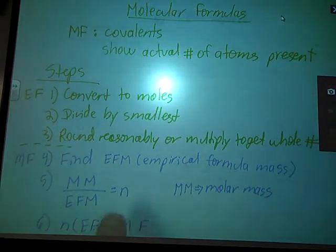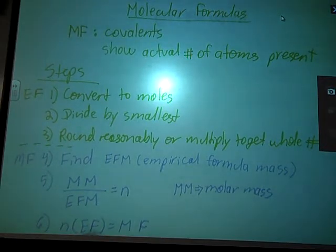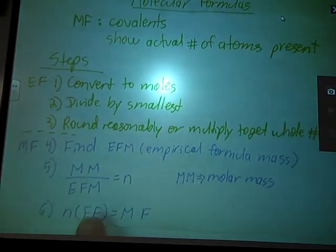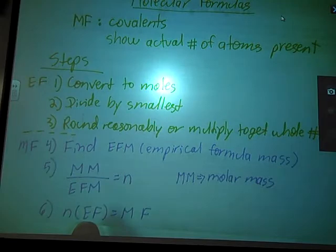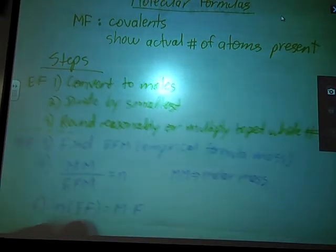After that, you're going to take that number and you're going to multiply it by your empirical formula to get your molecular formula. This is the factor that makes these two formulas different. That helps us go from ratio to actual number of atoms present.